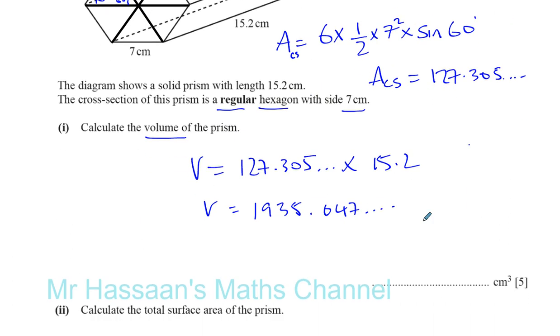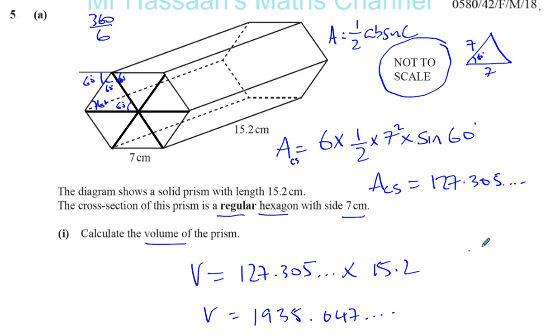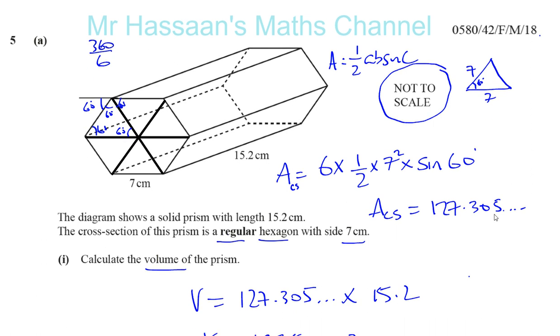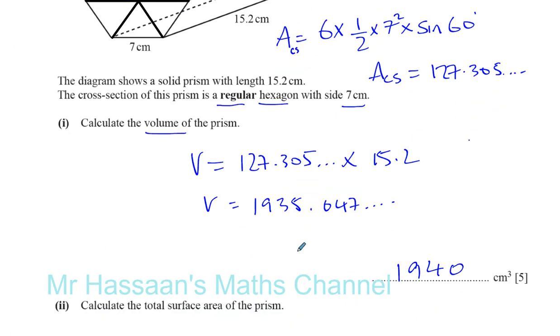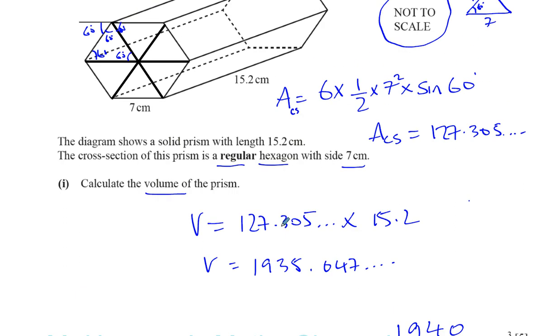We need to round this to three significant figures, which is 1940 centimeters cubed. So that's the volume of the prism, which was found by finding the area of the cross-section, a regular hexagon. You've got six equilateral triangles of sides seven centimeters. It's six times a half times seven squared times sine 60. That gives us the area of the cross-section, and you multiply that by 15.2, and you get your answer.